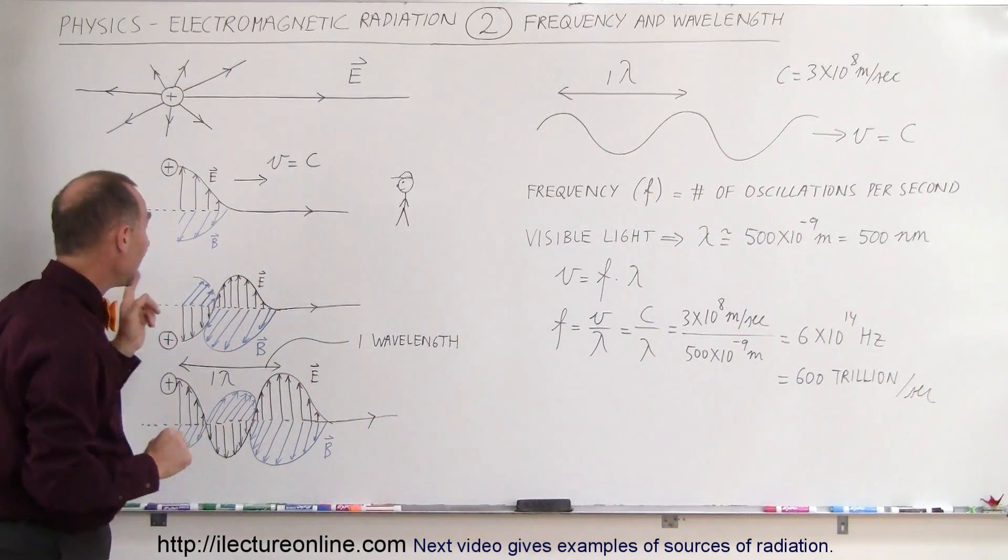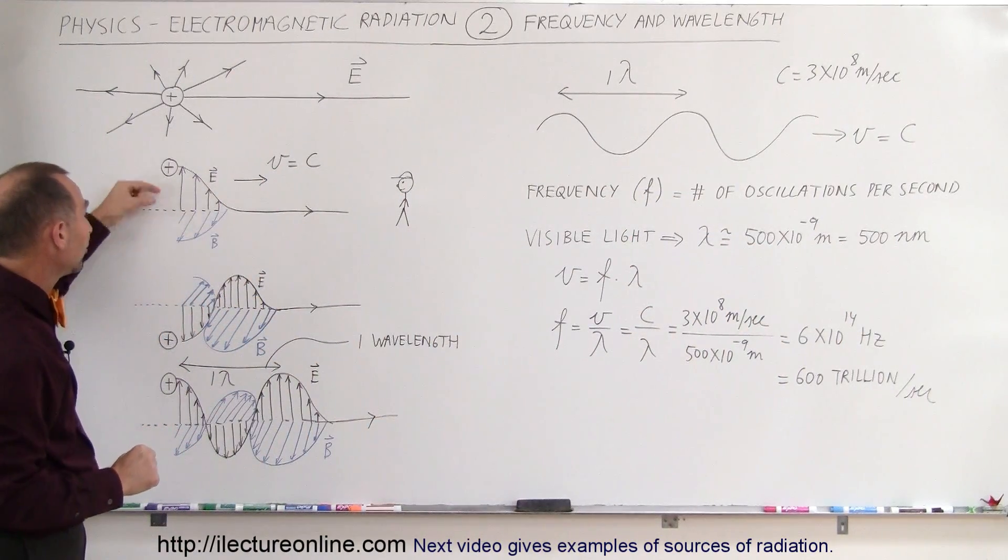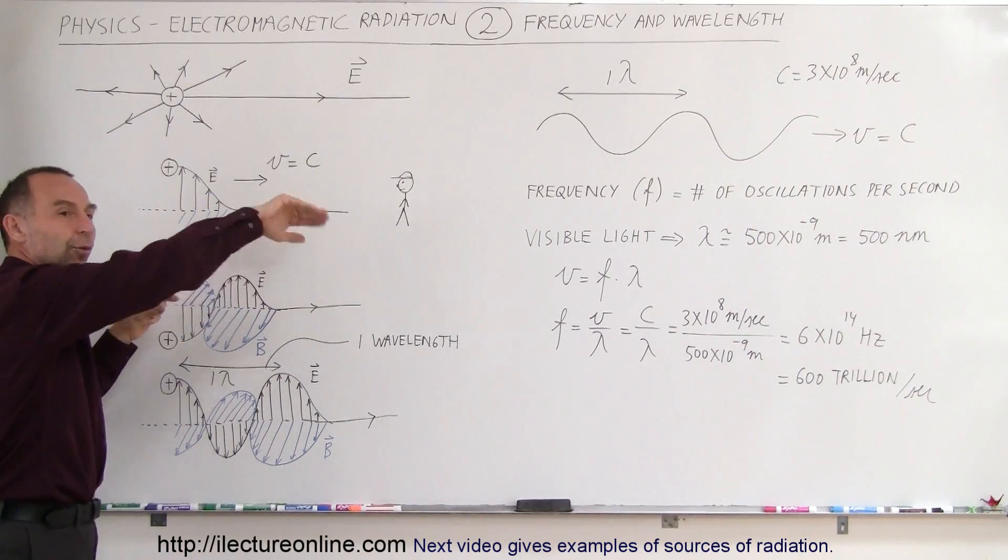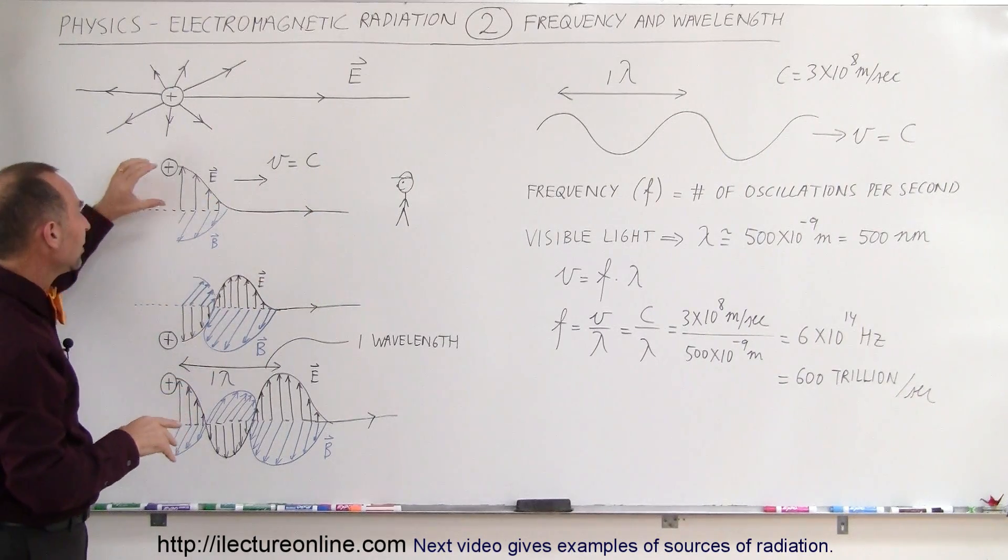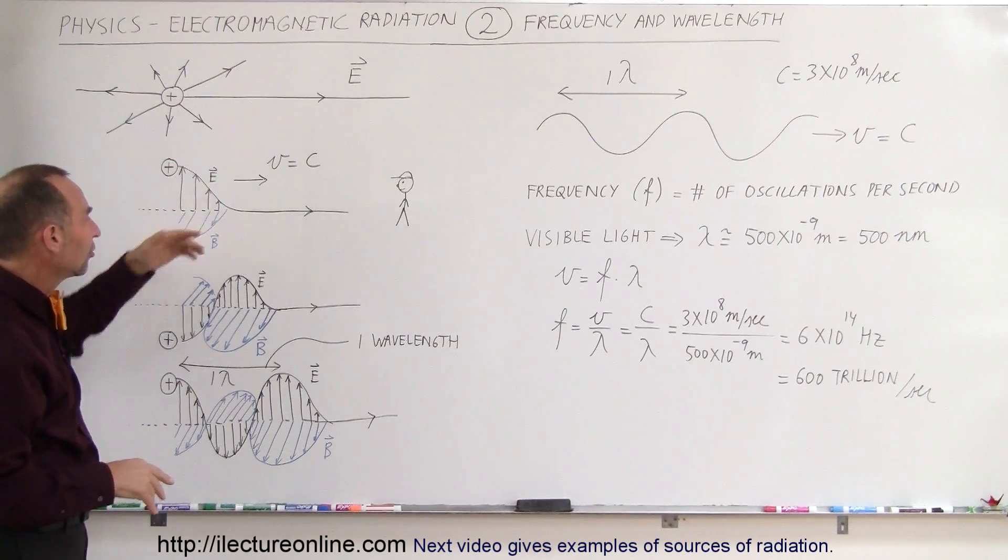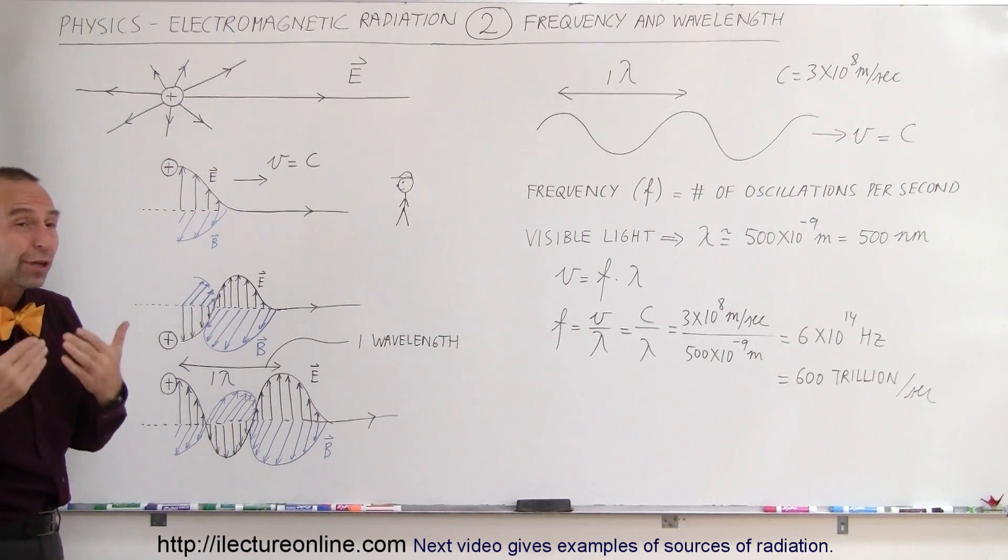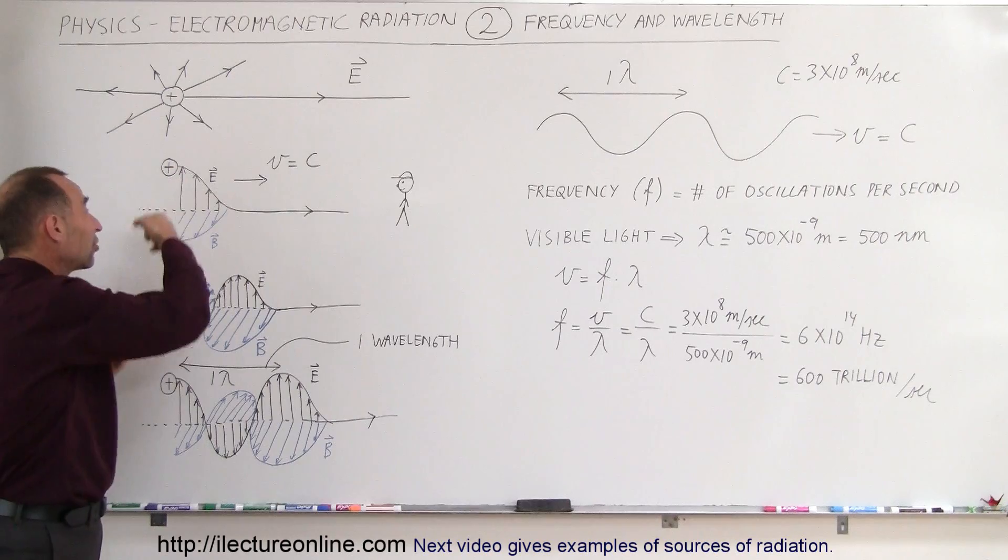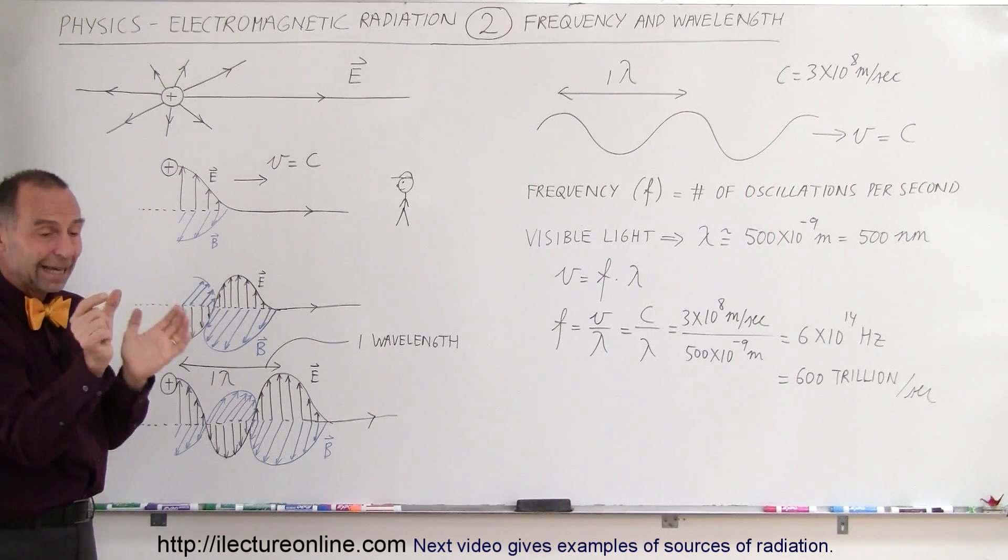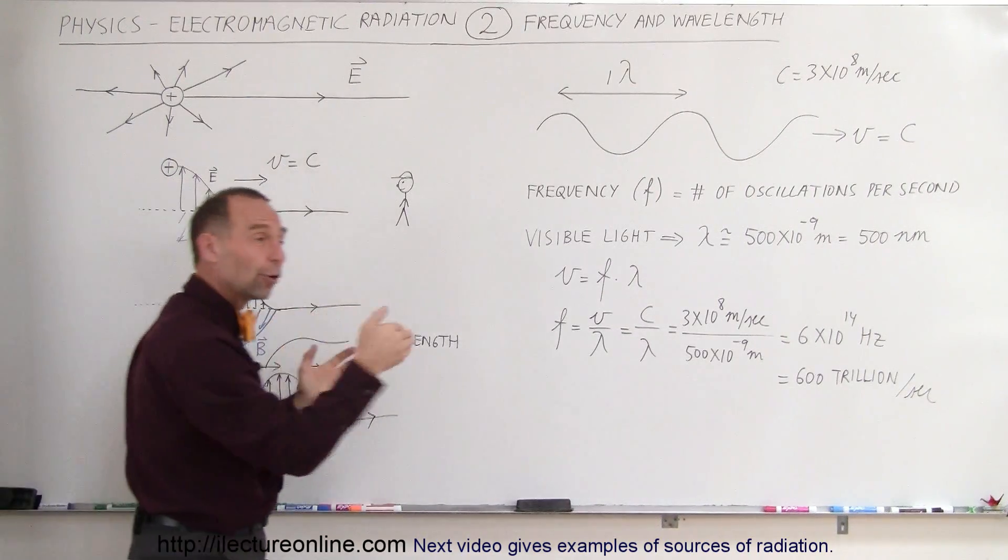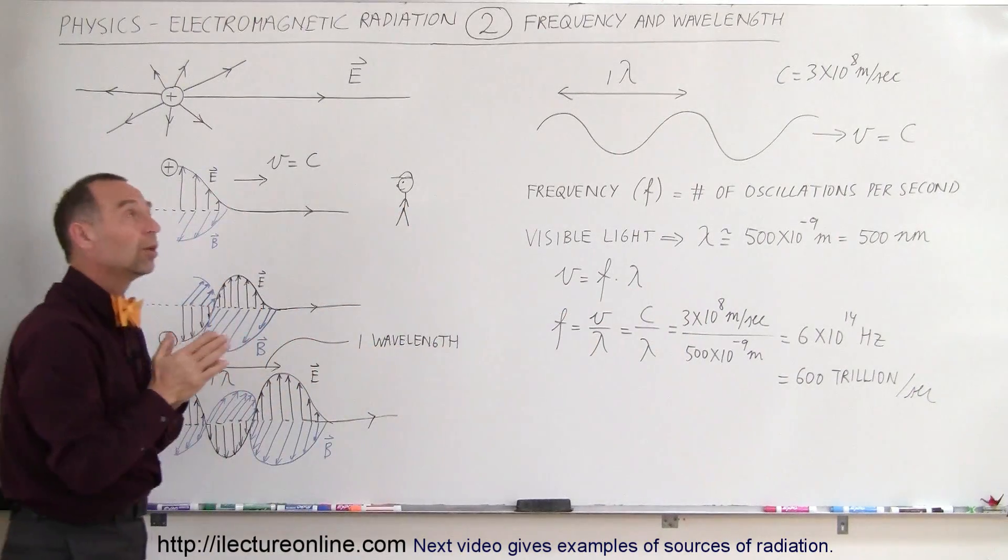Now, what happens is that if I move this in this direction, notice that the electric field oscillations will be in different direction. So the direction of the electric field oscillations and magnetic field oscillations purely are a result of in which direction that object is oscillating. If the oscillation is like this, then the electric field, of course, will be oscillating like this as well.